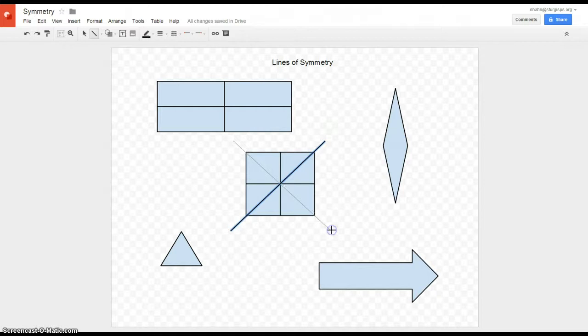Two diagonals, and then one up and down and one across. So there's four lines of symmetry in a square. We're going to take a look at this rhombus here.